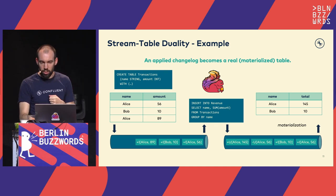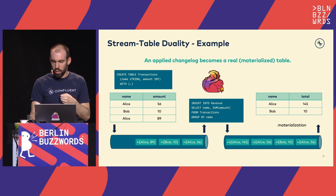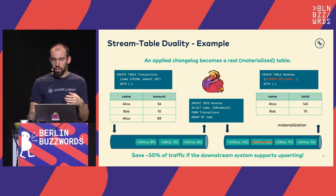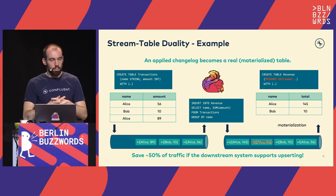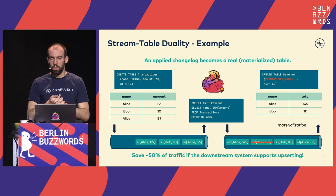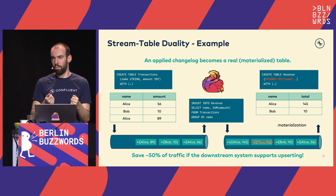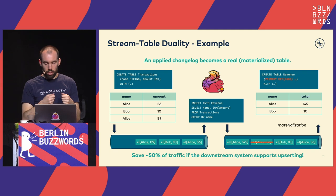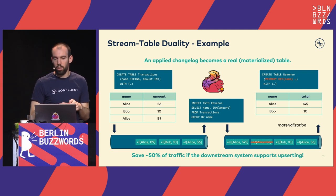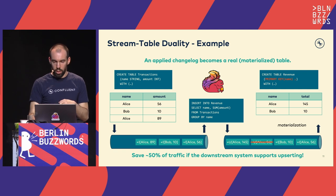An applied changelog becomes a real materialized table. If you want to save 50% of the traffic, you can define a primary key on the revenue table — then we can even skip the 'update before' because we have a key, and perform per-key updates in the downstream system if it supports that. We save 50% of output traffic, needing only the 'update after' message to update the table.